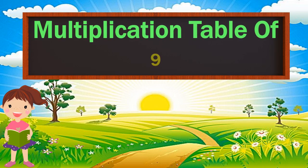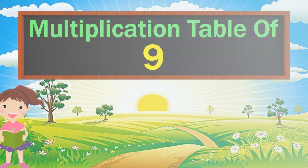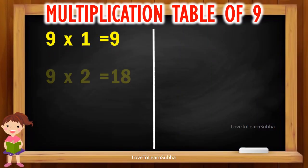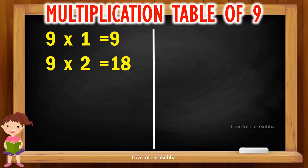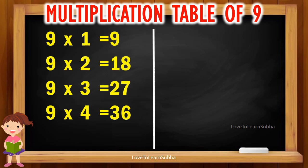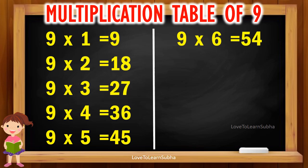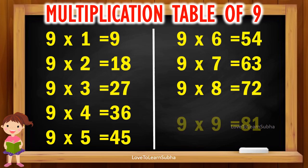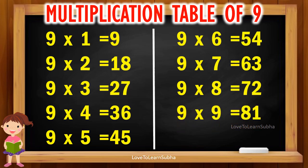Multiplication table of 9. 9 1s are 9, 9 2s are 18, 9 3s are 27, 9 4s are 36, 9 5s are 45, 9 6s are 54, 9 7s are 63, 9 8s are 72, 9 9s are 81, 9 10s are 90.